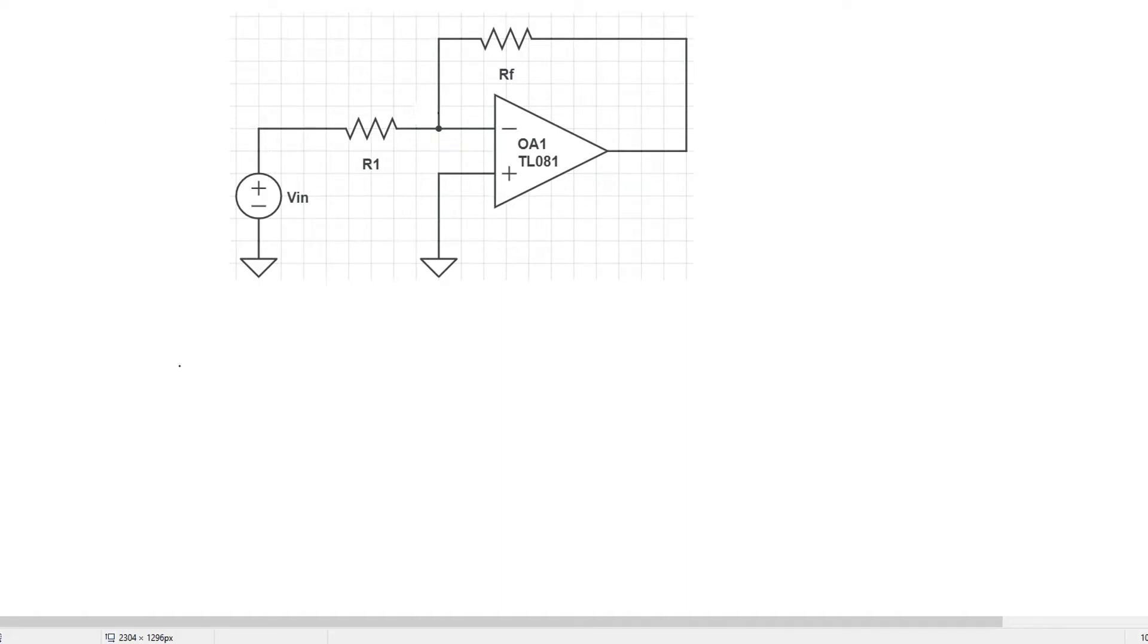Let's find the DC gain of this operational amplifier circuit. To do that we first have to find the transfer function for the circuit.